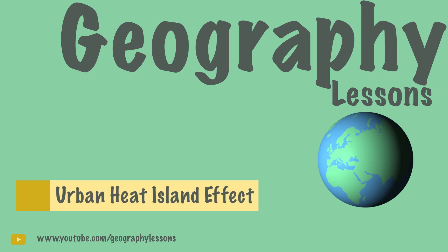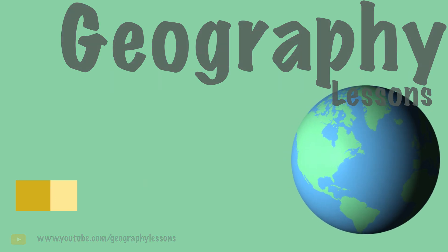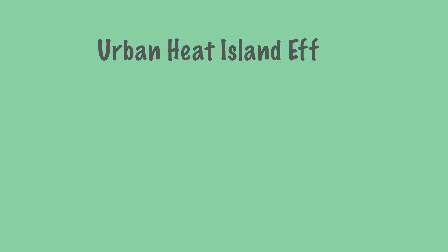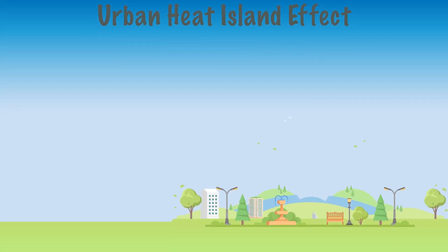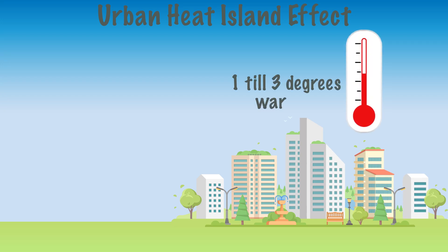Urban areas are generally warmer than rural ones. This difference is called the urban heat island effect. In most cities, it is 1 to 3 degrees Celsius warmer during the day than in the surrounding countryside. This difference can be much higher at night.